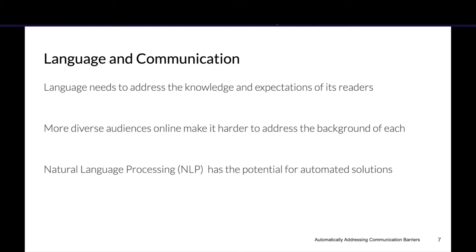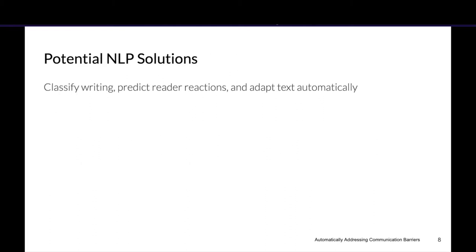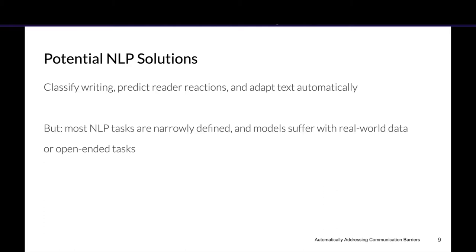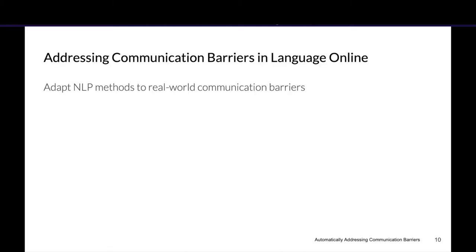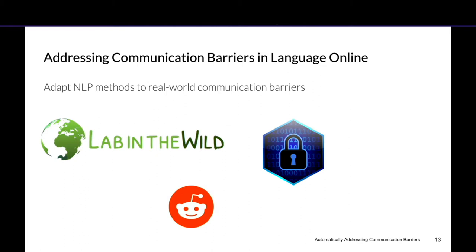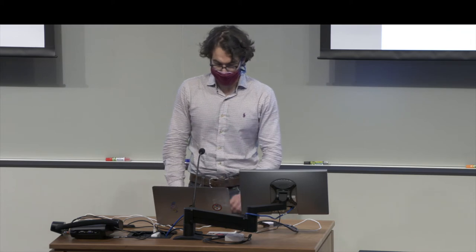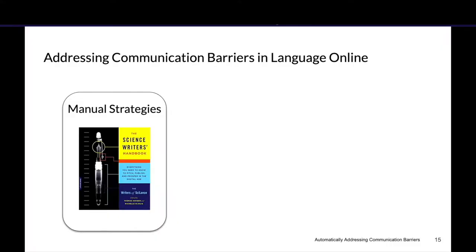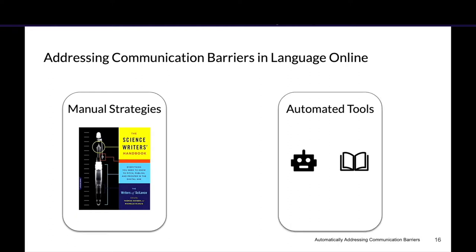One answer to addressing issues in language that doesn't scale is natural language processing, or NLP. NLP offers models that can classify writing, predict reader reactions, and adapt text automatically. While promising, most state-of-the-art NLP models perform well on narrowly defined tasks but suffer substantial performance losses when adapted to real-world or more open-ended tasks. In my work, I focus on addressing real-world communication barriers automatically. My past work explored how language influences user behavior in online experiments, in security and privacy interfaces, and in the subreddit r/science, showing that good communication is person-specific. I'll talk about two projects related to science communication here.